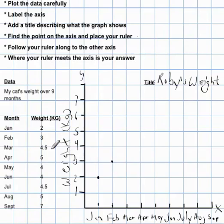And March, he was four and a half, so March is there. There's three, there's four, there's five, but he's not five, he's four and a half, so he's going to be between here and here. We'll just put that roughly in the middle. And April, he was five kilograms.